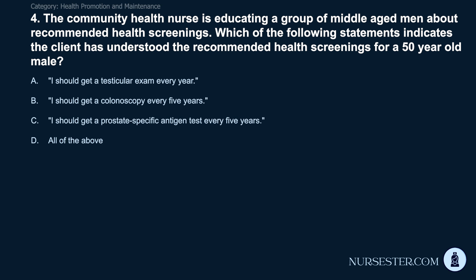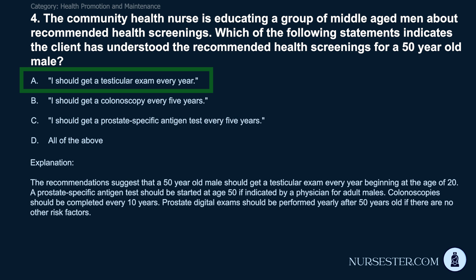Question 4: A community health nurse is educating a group of middle-aged men about recommended health screenings. Which statement indicates the client has understood the recommended screenings for a 50-year-old male? A) I should get a testicular exam every year. B) I should get a colonoscopy every five years. C) I should get a prostate specific antigen test every five years. D) All of the above. Correct answer: A. A testicular exam every year. Recommendations suggest a 50-year-old male should get a testicular exam yearly beginning at age 20. A PSA test should start at age 50 if indicated by a physician. Colonoscopies should be completed every 10 years. Prostate digital exams should be performed yearly after age 50 if there are no other risk factors.